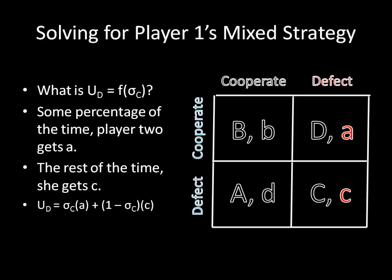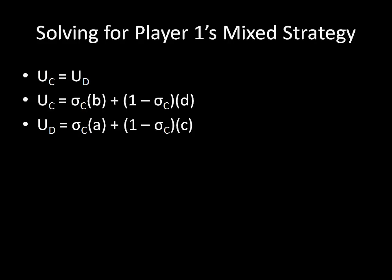Now we ask ourselves what player 2's utility is for defecting as a function of some mixed strategy of player 1's. That same mixed strategy as the one in the last slide. And we see here that some percentage of the time she will get A, and the rest of the time she'll get C. And that's all we need to set up our equations.